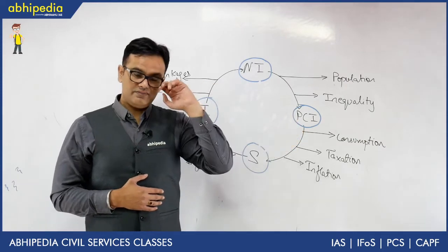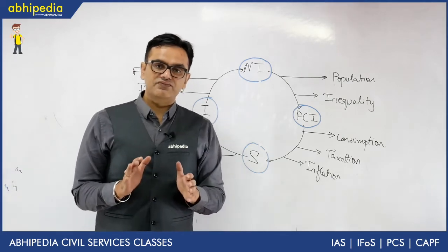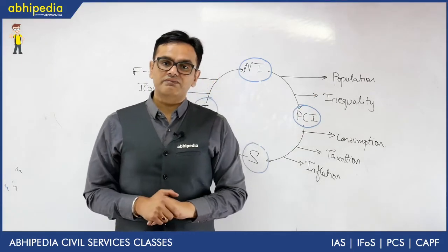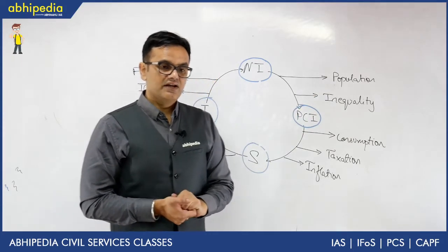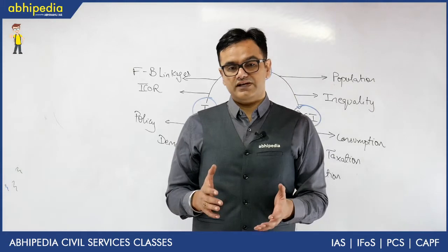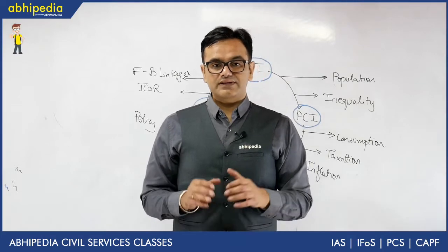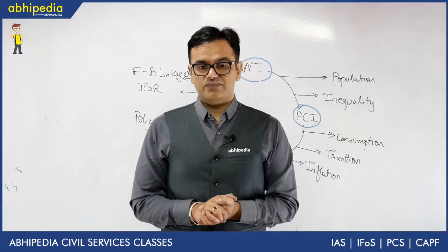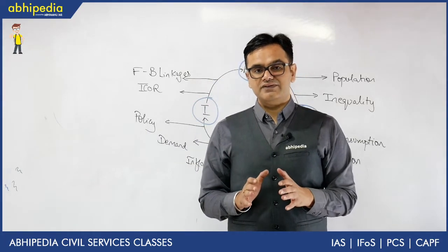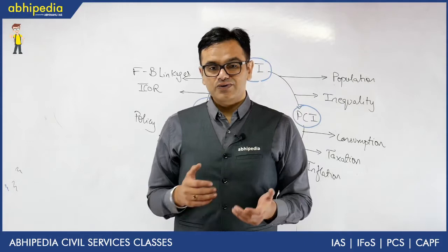From national income to per capita income, there are two basic forces at play: one is population, and the other is inequality. If we recall the Oxfam report that came out in 2017, it stated that 90% of the wealth in India has been siphoned off by 10% of India's rich population, and the rest of the wealth is for the remaining population. So there is a lot of inequality in terms of wealth distribution, and this inequality will definitely raise the question of who is actually saving in India or who is actually earning.